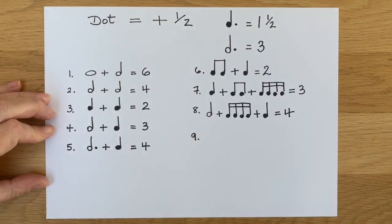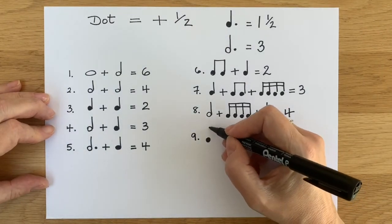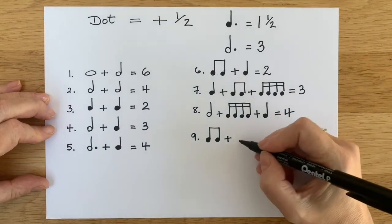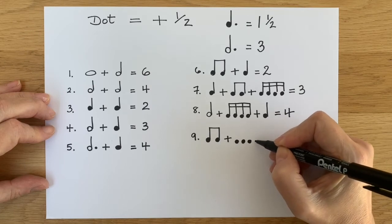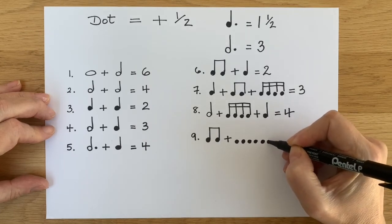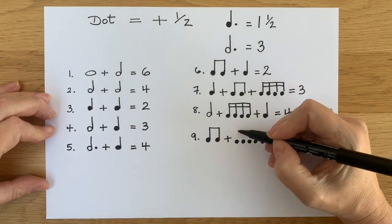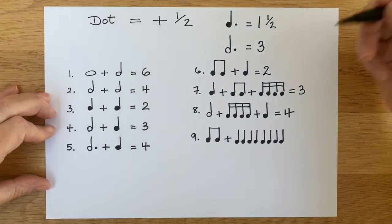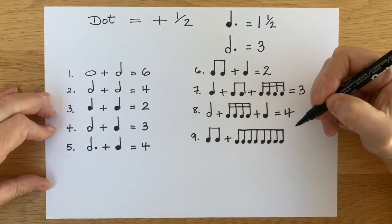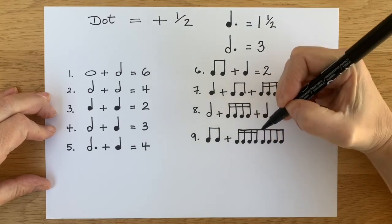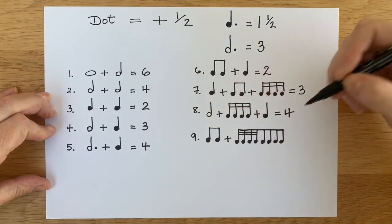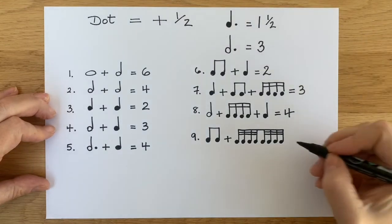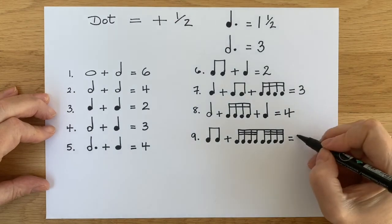Number nine. Two quavers plus demi-semi-quavers. Now you need to do four notes, all joined up. And then another four notes. Give them the legs. Give them all a line on the top. And then the next line is just going to join the first four notes. And another line. And then the next four notes, you join them up with another two lines. So they have three lines altogether. So what's the total here? Two.